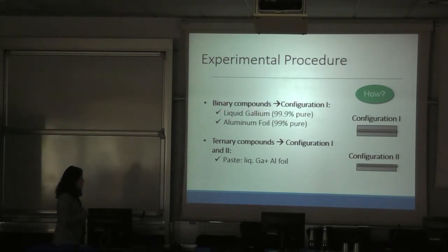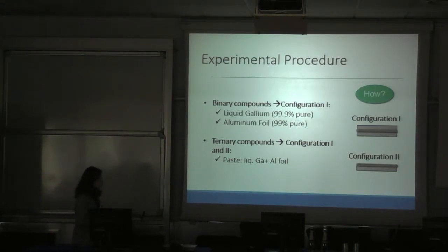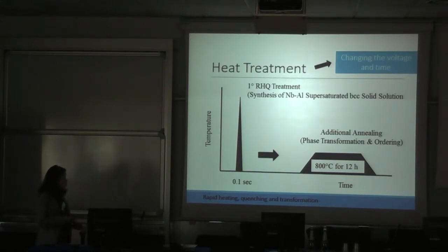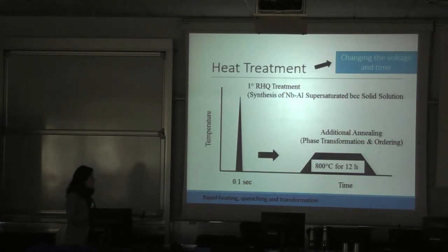For binary compounds, we use liquid gallium and aluminum foil, only with configuration 1. And for ternary compounds, we use configuration 1 and 2. We prepare a paste that is made of liquid gallium and aluminum foil. The most common heat treatment reported to precipitate A15 superconductor is called rapid heating, quenching, and transformation. This means we have to anneal to a higher temperature for a short time to synthesize the niobium aluminum or niobium gallium supersaturated BCC solid solution. And after, we have to transfer this initial phase into A15.